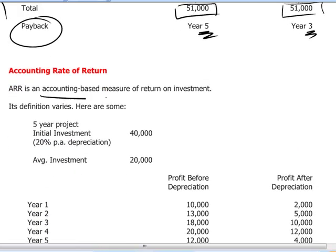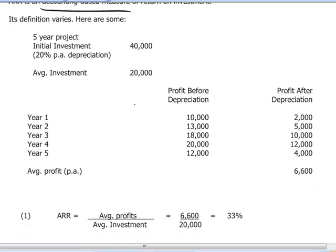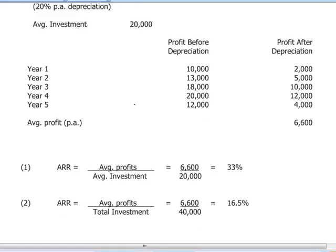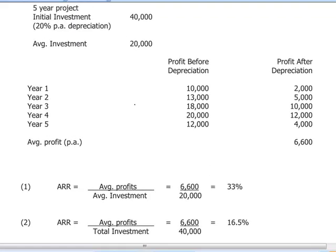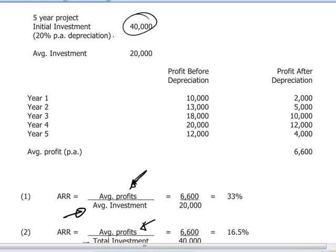The accounting rate of return is an accounting-based measure. The calculations for the rate of return are based on two separate ways of calculating: the average profits derived from a project divided by the average investment, and the second way is the average profits divided by the total initial investment made. Taking a $40,000 investment for a five-year project with 20% per annum depreciation, the average investment will be $40,000 divided by two, which is $20,000.